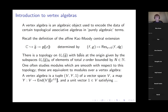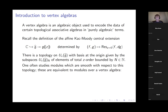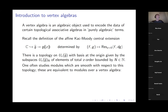Whose theorem is that? I would say Beilinson and Drinfeld — there's a section in their book describing this quite clearly. There's also a very nice paper by Beilinson following the book which explains things about different tensor structures on topological vector spaces and how they arise naturally in geometric contexts. That is really the most clear-headed source.